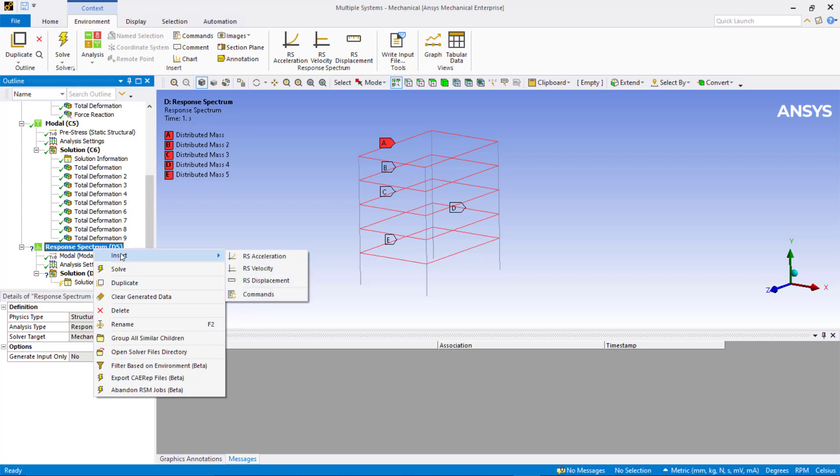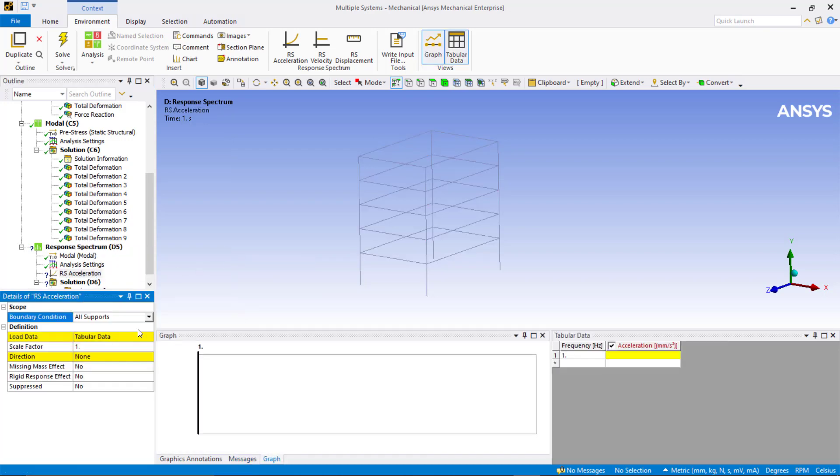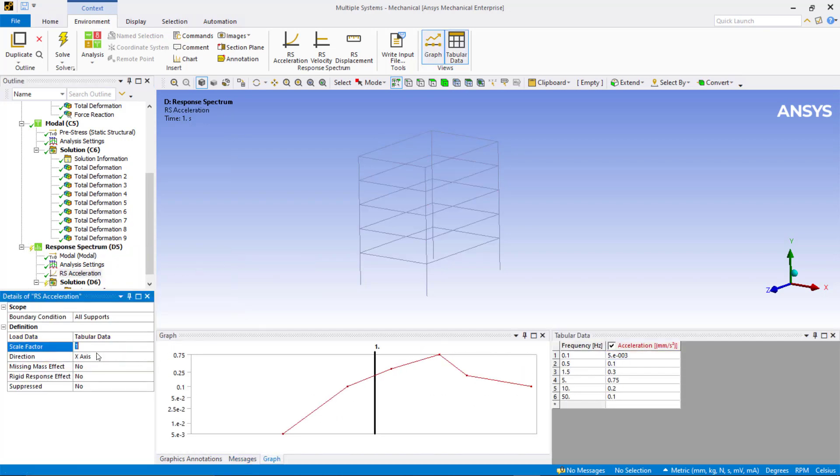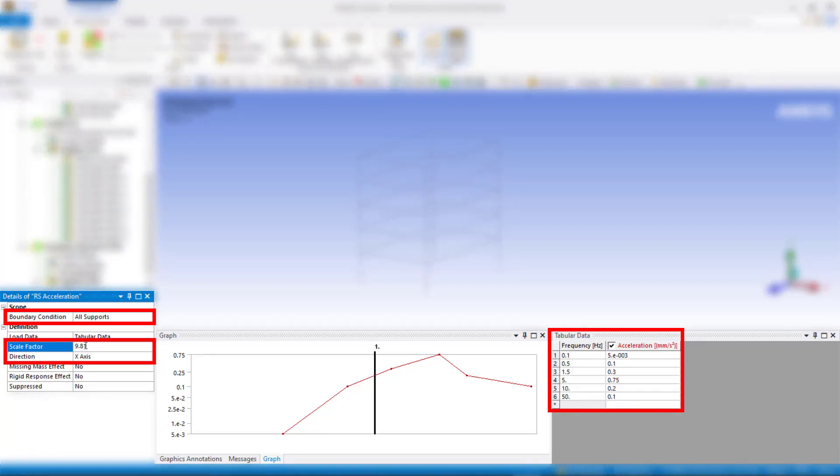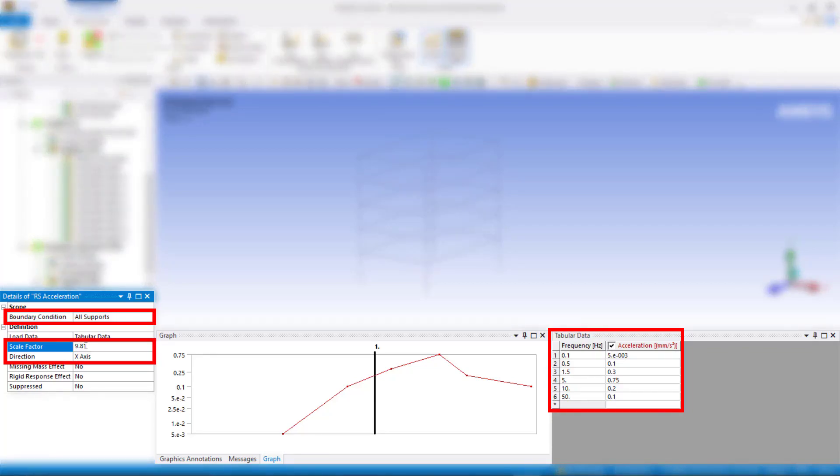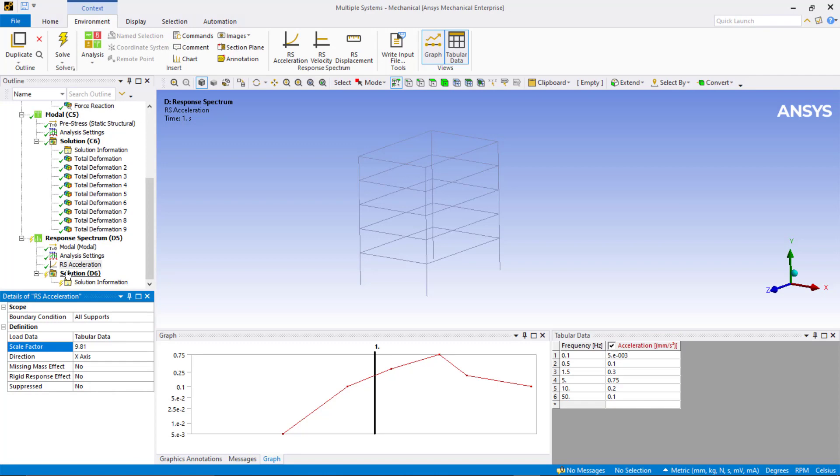Insert an RS acceleration G load. Enter data provided for acceleration in X direction. Solve the response spectrum analysis.